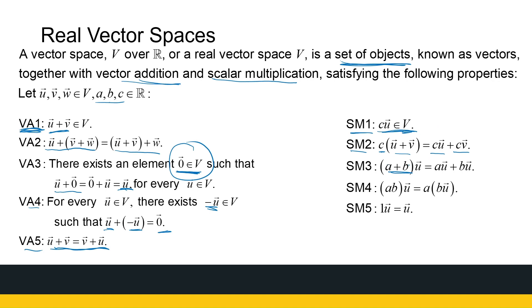The third scalar multiplication axiom: if I have two scalars A and B, then (A plus B) times U must equal A times U plus B times U. The fourth: A times B, the product of two real numbers, times U equals A times (B times U). And the fifth: the real number 1 times any vector U, however scalar multiplication is defined, must give U back. Once a set meets all 10 of these requirements, we can say it is a vector space.